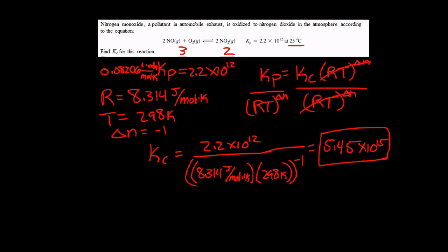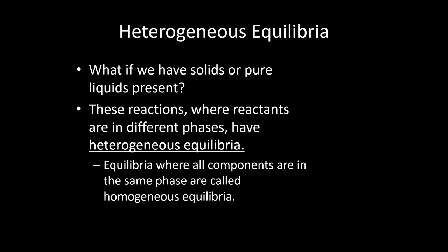I think we'll go ahead and call it there for this video. In the next one we will look at heterogeneous equilibria. Which is where we'll be looking at certain equilibria. Where we actually don't take everything from the balanced chemical equation and put it into the equilibrium constant. We will actually leave some stuff out. Depending on its phase. So we'll talk about that in the next video.